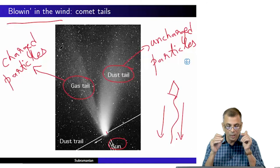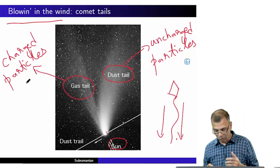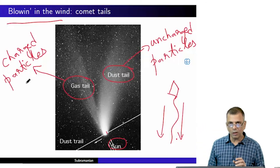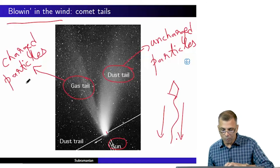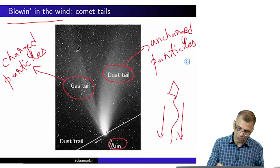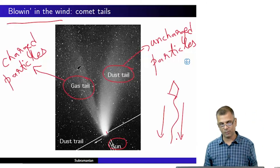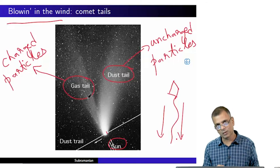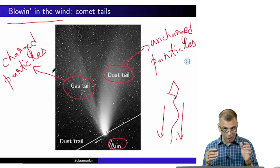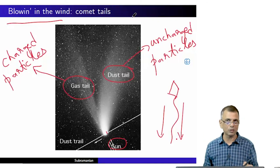More specifically, the solar wind influences the tail of the comet which comprises charged particles. Although we have not talked about magnetic fields at all, it turns out that the solar wind also carries and essentially combs out the intrinsic magnetic field of the sun into a pattern. What these charged particles are actually doing is following the large-scale magnetic field from the sun, which is drawn out by the solar wind. So the solar wind is essential to this description. This was one of the first proofs of the existence of the solar wind.